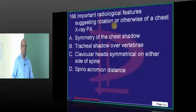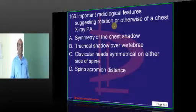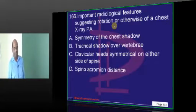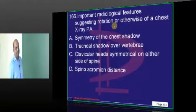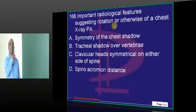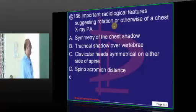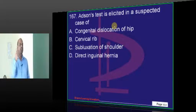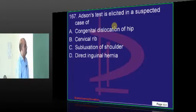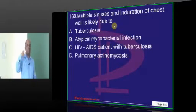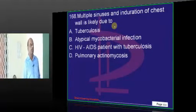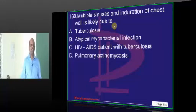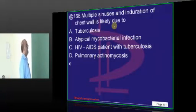How is the rotation of the chest at the time of taking an x-ray? Which feature will you examine to say that this is excessively rotated or normally rotated? You will look at the clavicular head — whether it is symmetric — based on which you will decide. Addison's test is for cervical rib. Multiple sinuses and induration means we should think of TB or actinomycosis — thoracic actinomycosis: induration, multiple sinuses. A is typically actinomycosis.